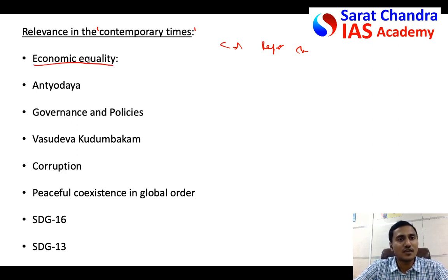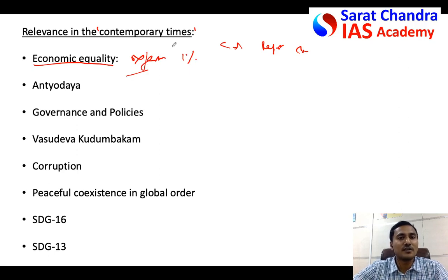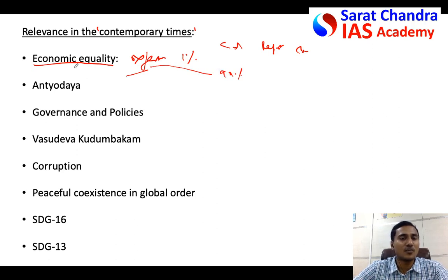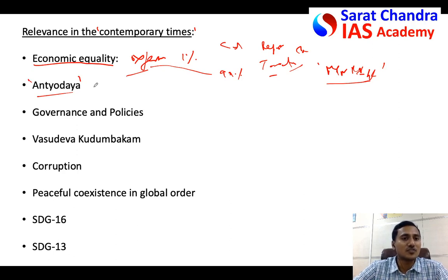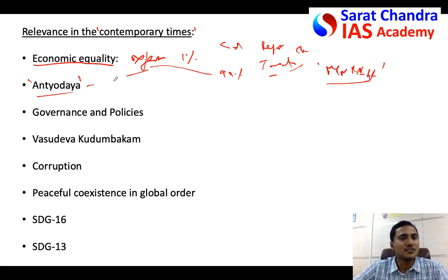How is integral humanism relevant to contemporary times? First, it focuses on economic equality. You can cite the Oxfam report that the top one percent of the world's richest people control more wealth than the remaining 99 percent. This kind of problem can be solved when the entire world focuses on economic equality. In India, taxation is a form of redistribution of wealth, and government schemes like MGNREGS focus on poor people. The concept of Antyodaya is a part of integral humanism — it says the poorest of the poor, the last man standing, shall get the benefits of economic development, similar to Gandhi's Sarvodaya concept.